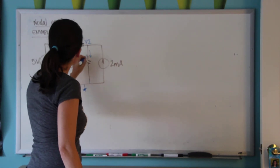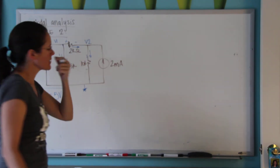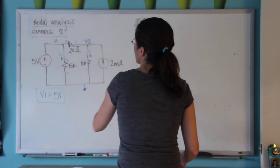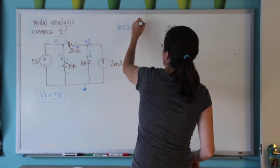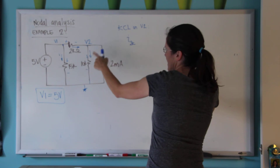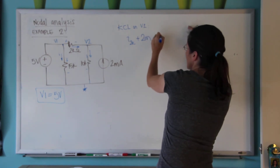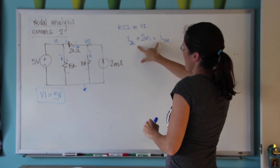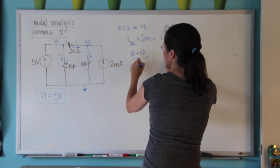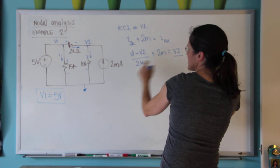I'm going to mark these other currents. And therefore, I only have one equation. KCL on node V2 is going to be: the current on the 2 kΩ plus 2 mA — this current is going into this node — equals the current on the 10 kΩ. The current on the 2 kΩ is (V1 minus V2) divided by 2k, plus 2 mA, equals V2 divided by 10k.